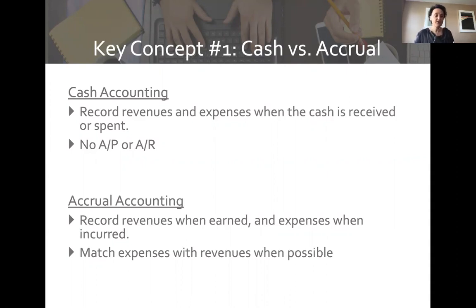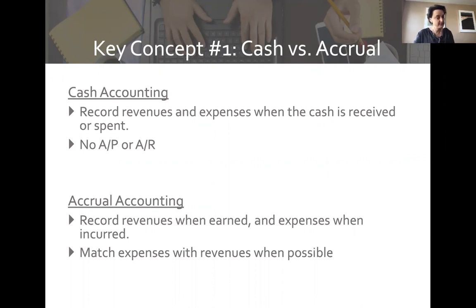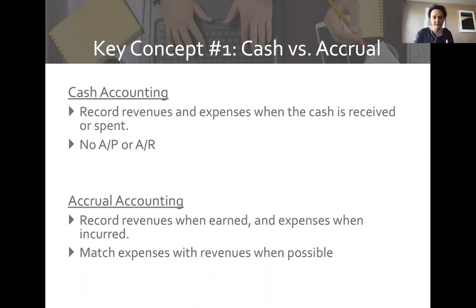With cash accounting, we record revenue and expenses when the cash is received or spent. With that system there's no accounts payable — what we owe to our vendors — and no accounts receivable — what our customers owe to us. With accrual accounting, we record revenue when it is earned and expenses when they're incurred, which is not necessarily when the cash flows. The goal is to match expenses with revenue whenever possible.